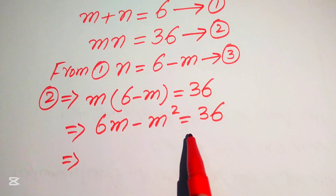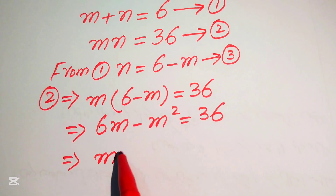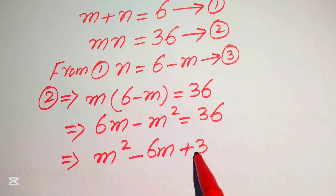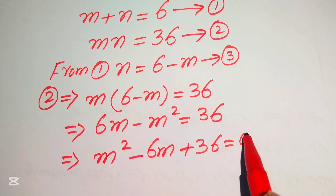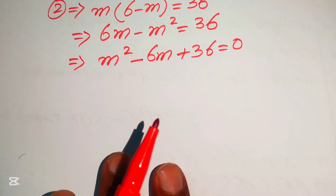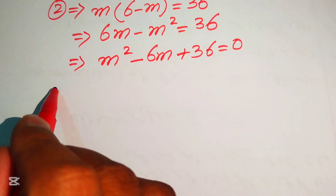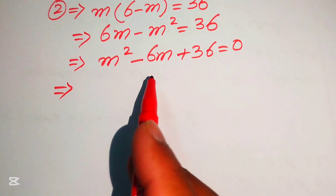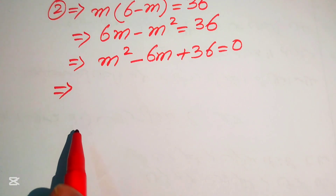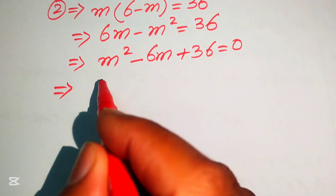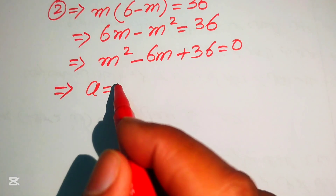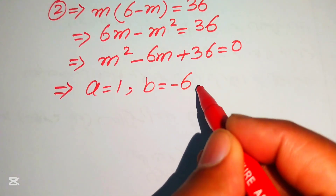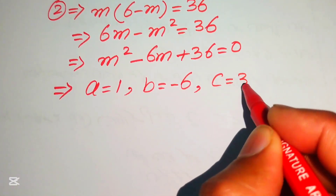We move these two terms to the right hand side: minus m squared becomes plus m squared, plus 6m becomes minus 6m, and plus 36, and the whole expression equals to 0. Now we need more simplification. We can factor or apply the quadratic formula. The coefficients are a equals to 1, b equals to minus 6, and c equals to 36.